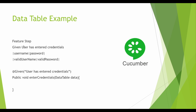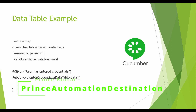Looking at this example, we have a feature step 'Given user has entered credentials' with labels username and password, and data — valid username and valid password. The corresponding step definition is bound to this step. You'll notice the parameter has data type DataTable. DataTable is a data type in Cucumber but it is not known to Java, so the question is how we read it in Java.